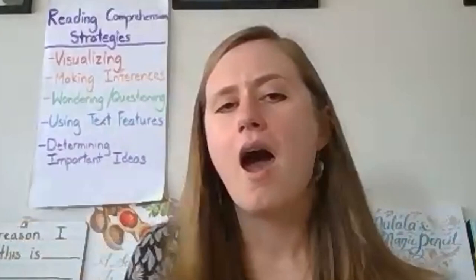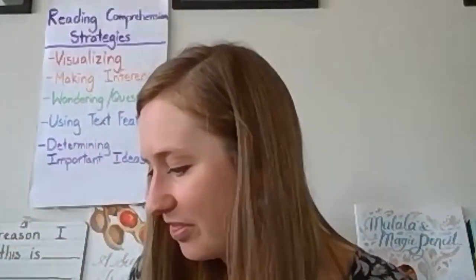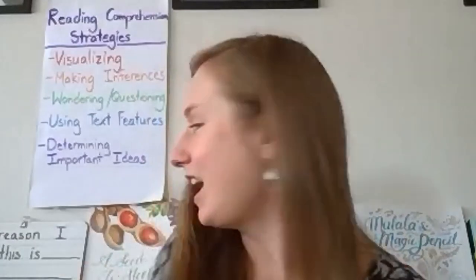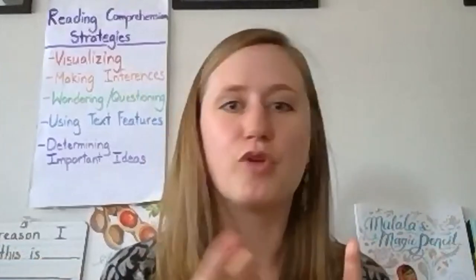Here's what I think about the army ants passage. I think the most important thing to understand and remember about army ants is that they work together to do some amazing things. The reason I think this is that all of the other ideas in the passage — like how they form a bridge to cross a river, how they can eat a tiger, how they can clear out houses — were all examples of army ants working together to do amazing things. What did you think was an important idea in this passage?